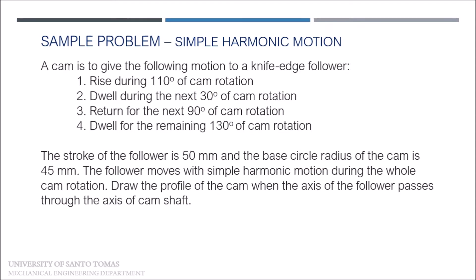We have here a sample problem for simple harmonic motion. We have a CAM that is to give the following motion to a knife edge follower: a rise during 110 degrees of CAM rotation, then dwell during the next 30 degrees, the return occurs for the next 90 degrees, and for the remaining 130 degrees, dwell will happen. The stroke of the follower is 50mm and the base circle radius of the CAM is 45mm. The follower moves with simple harmonic motion during the whole CAM rotation. Draw the profile of the CAM when the axis of the follower passes through the axis of the CAM.